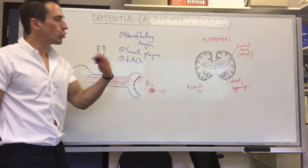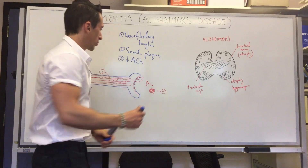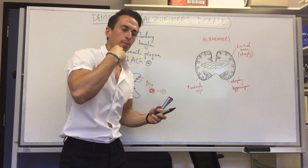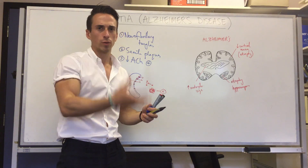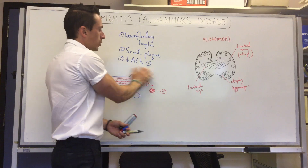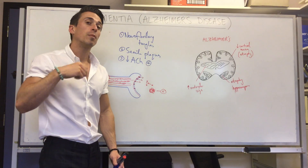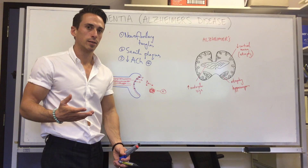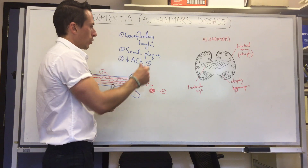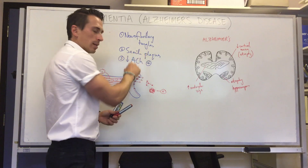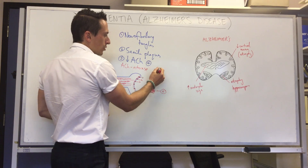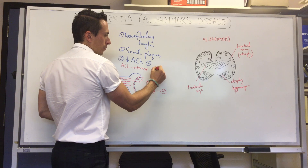Acetylcholine is an excitatory neurotransmitter in the central nervous system and is really important in laying down new neuronal synapses and forming memories — functions carried out by cholinergic neurons. We're not sure why this reduction in acetylcholine takes place, but it gives us a pharmacological opportunity. Since levels are reduced, we want to increase them by reducing the enzyme that breaks it down: acetylcholinesterase, which breaks down acetylcholine.